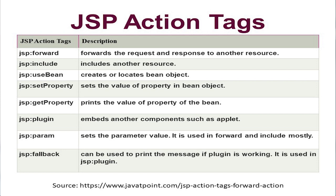Set property is also part of the bean. When we are using the bean component, we can set the value of a property in a bean object. Get property is used to receive that value — it prints all the values of the property of the bean. Plugin is also used to embed another component, such as an applet. When we require to add another component in our application, plugin is required.